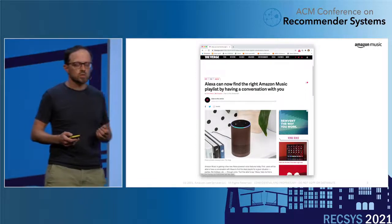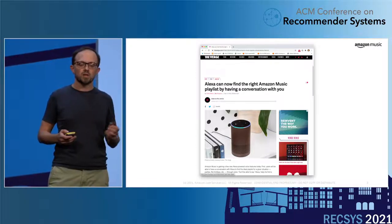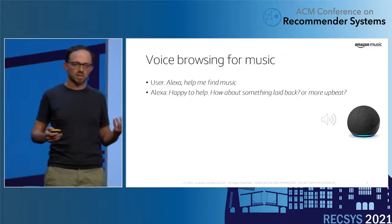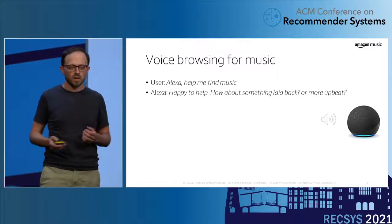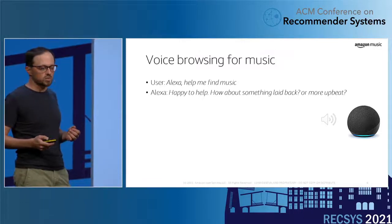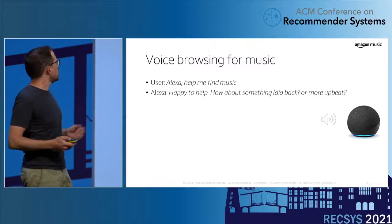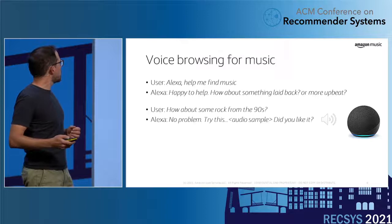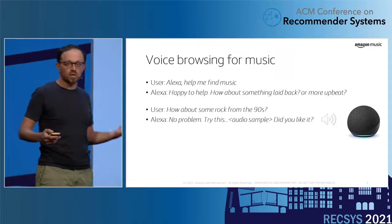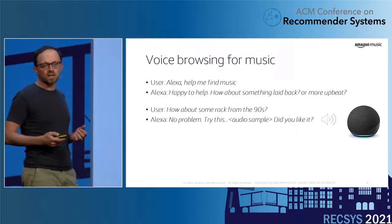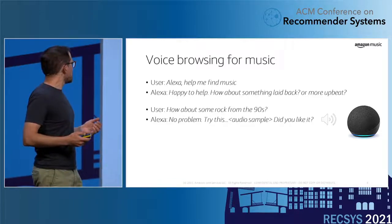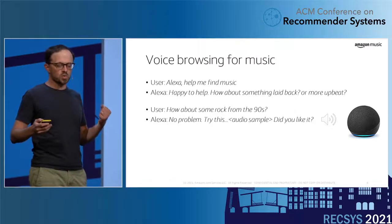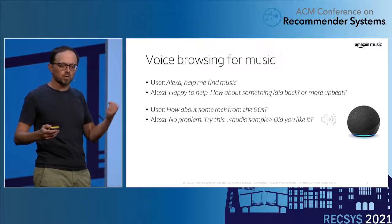So we launched our first conversational experience about two years ago. Essentially, users can say 'Alexa, help me find music.' Then Alexa starts asking questions, like about the mood of the user. The user can specify constraints, like 'I like 90s rock,' and then Alexa can decide to choose a specific entity and play an audio sample to the user.